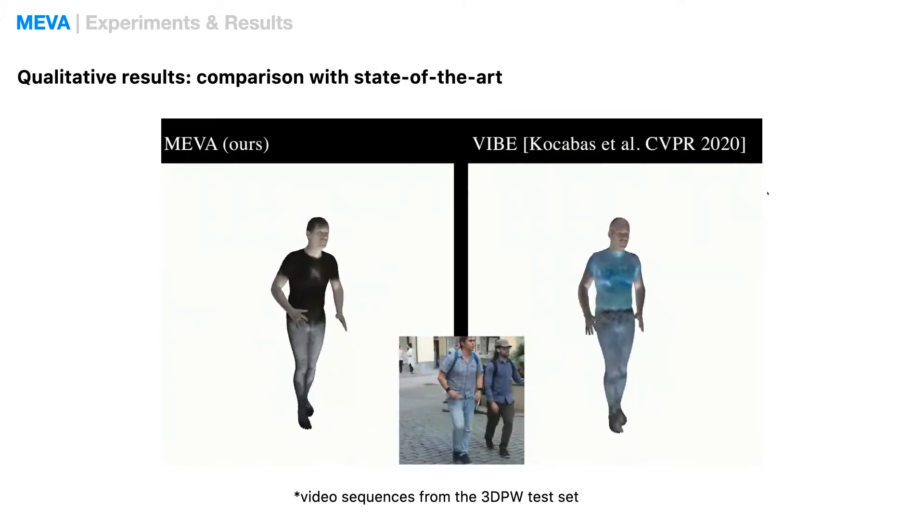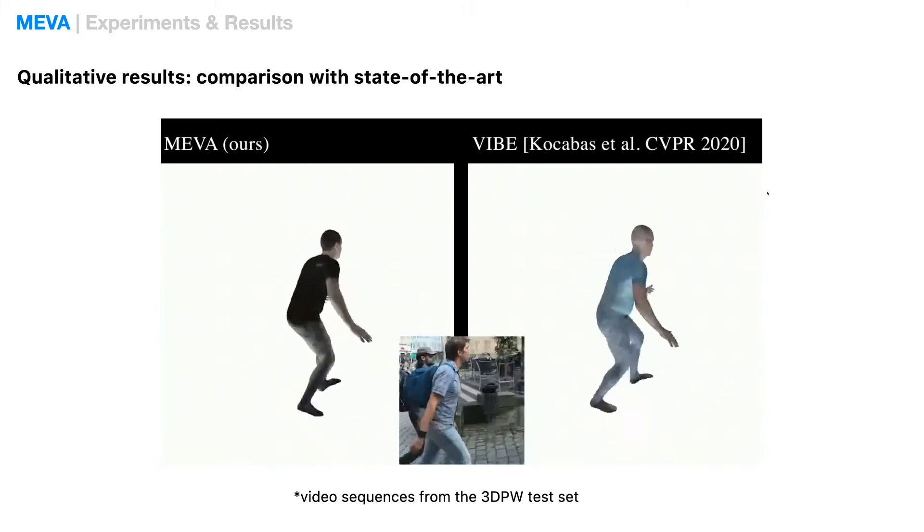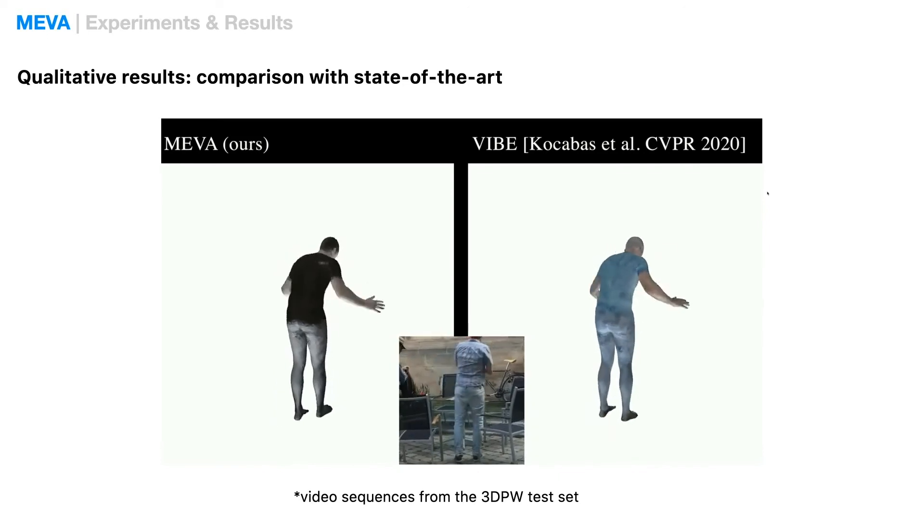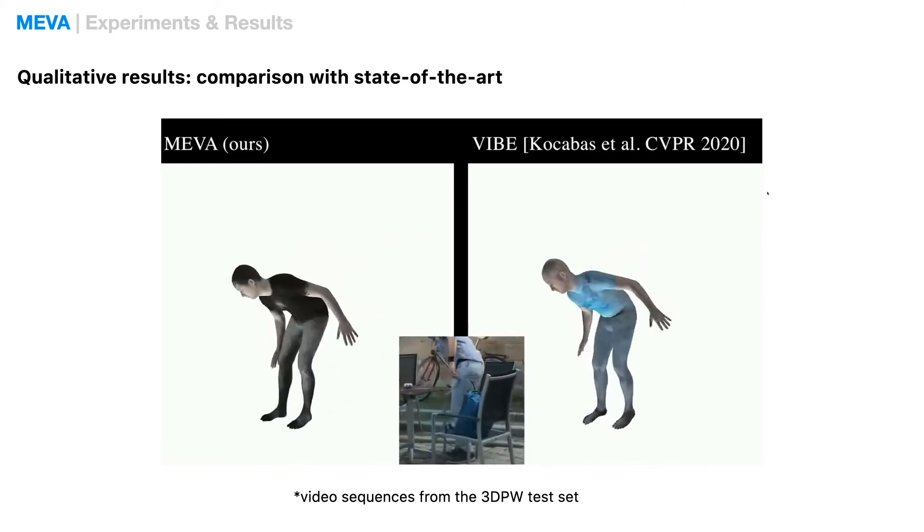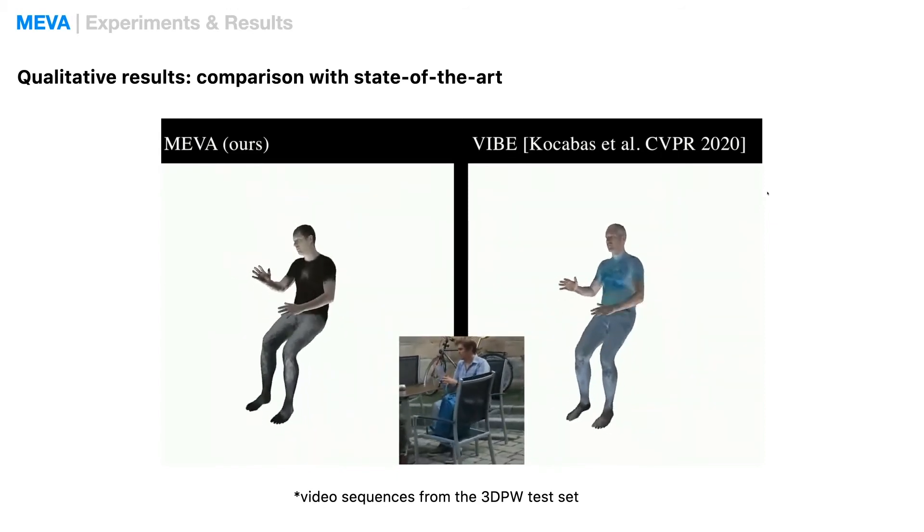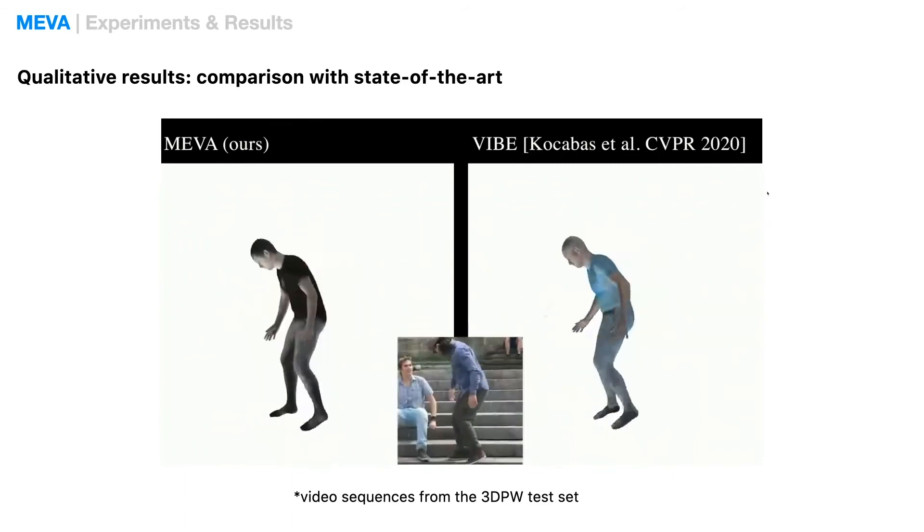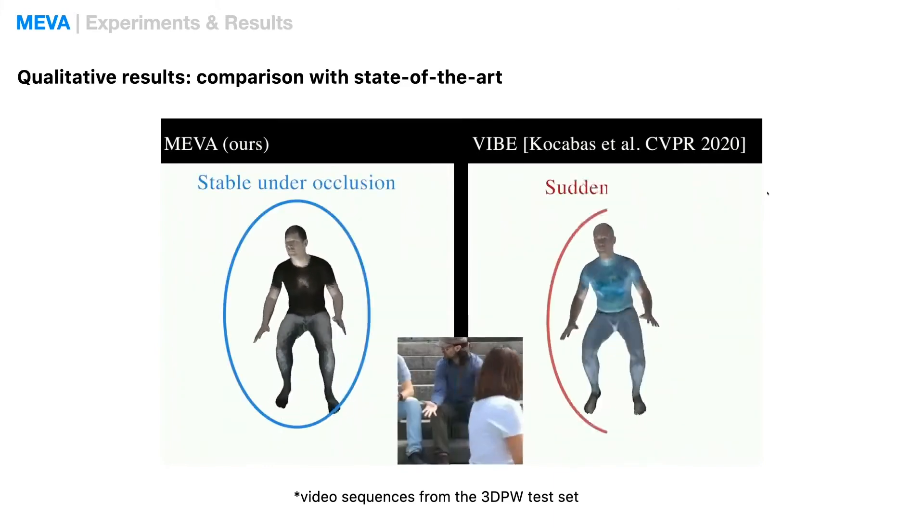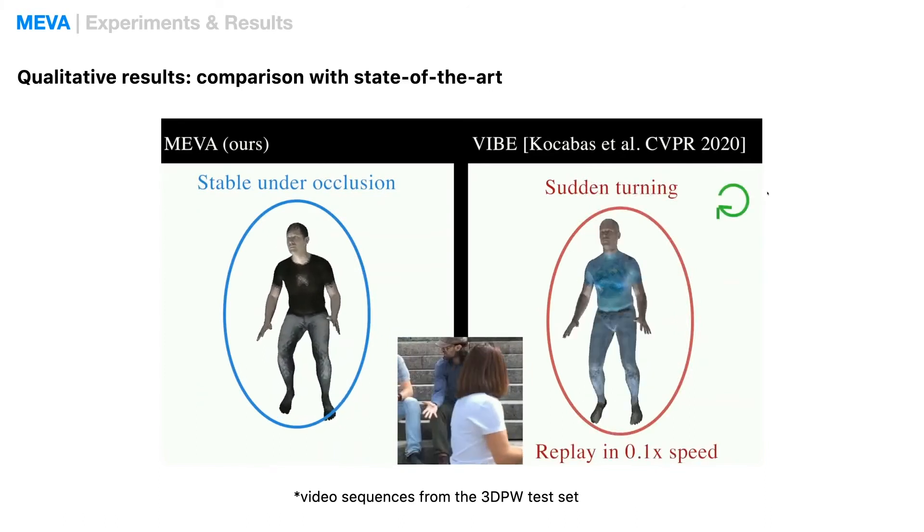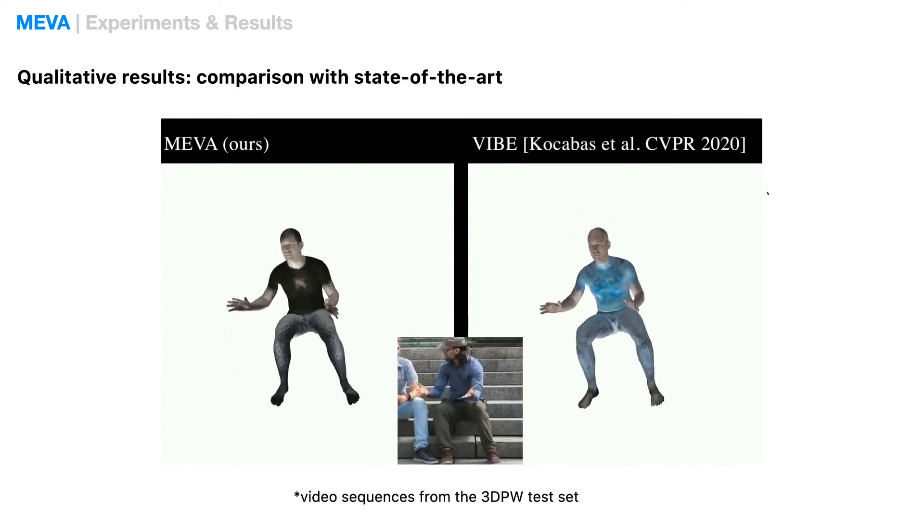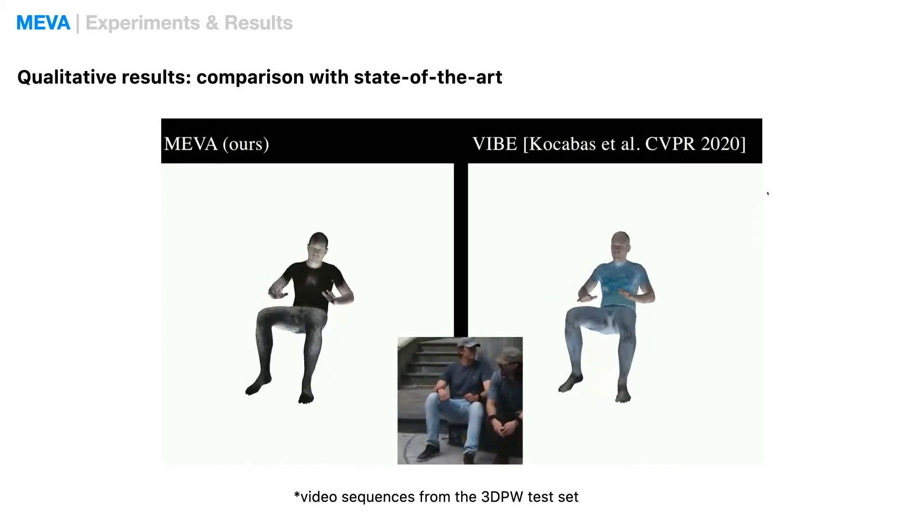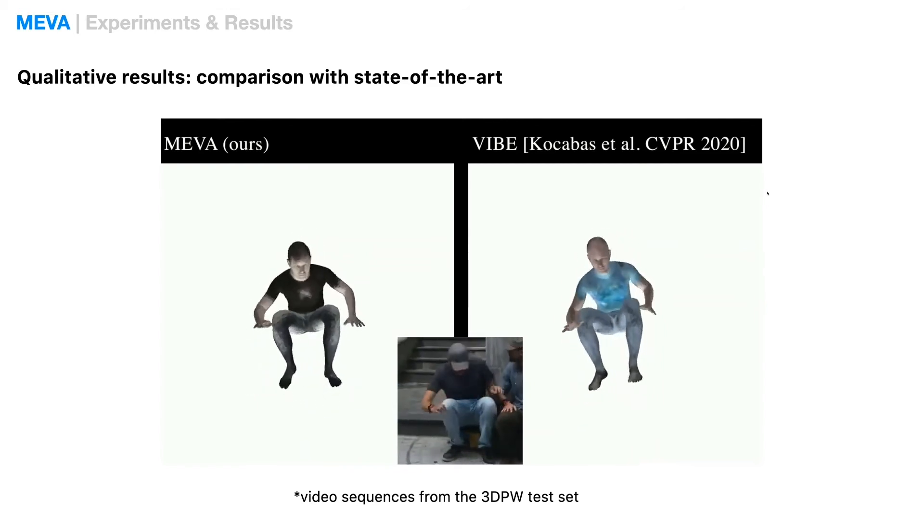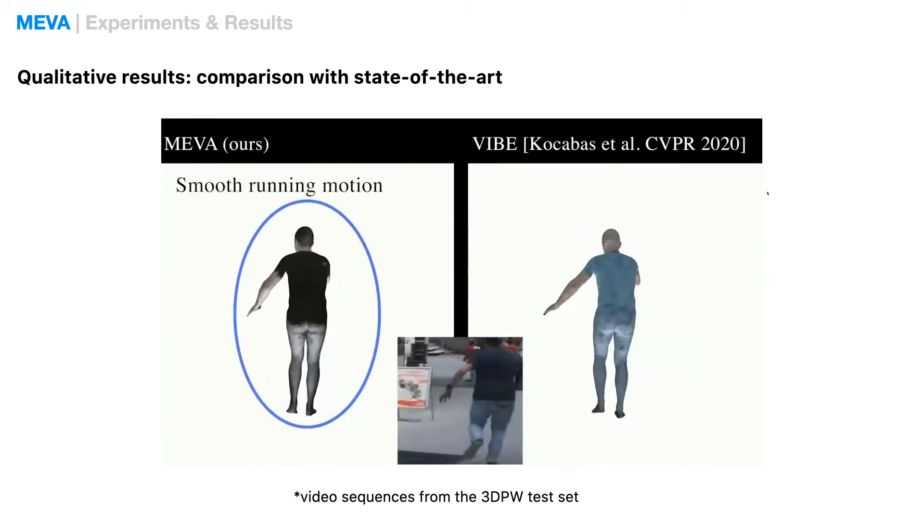MEVA is also more stable and does not have sudden flipping behavior. MEVA can handle occlusion and make the motion better and stable under occlusion. MEVA can also recover natural and coherent motion from dynamic scenes.